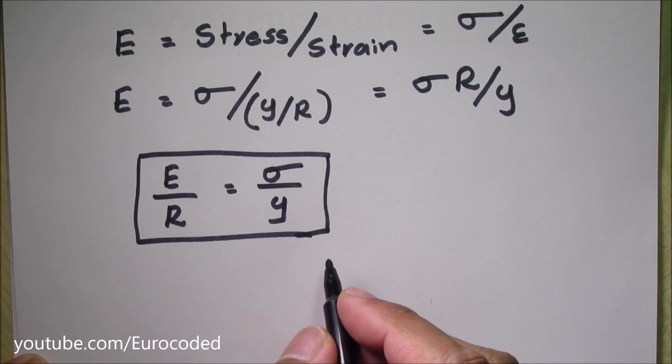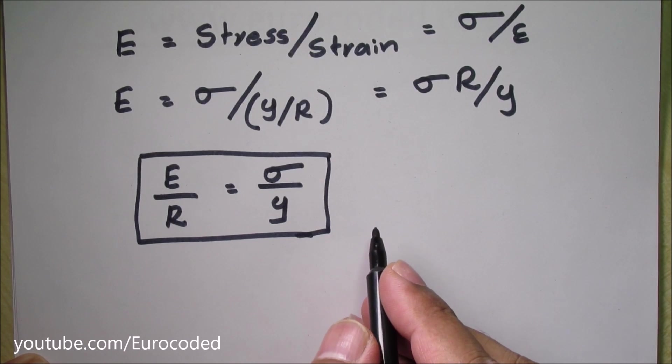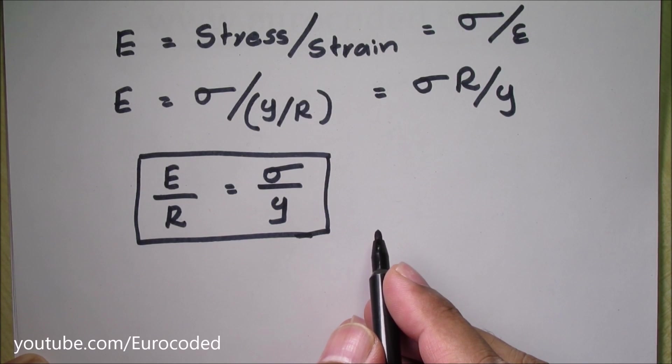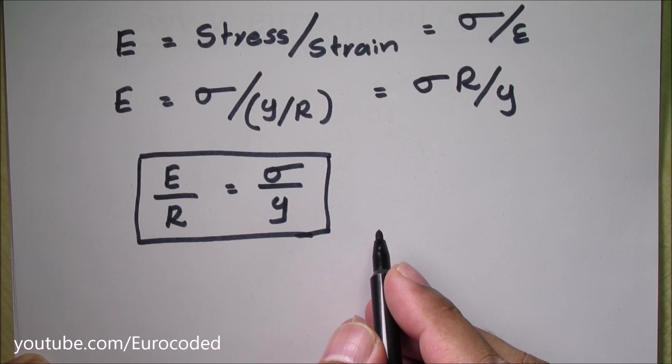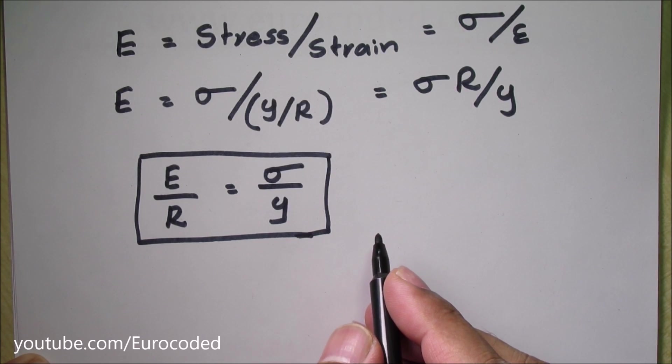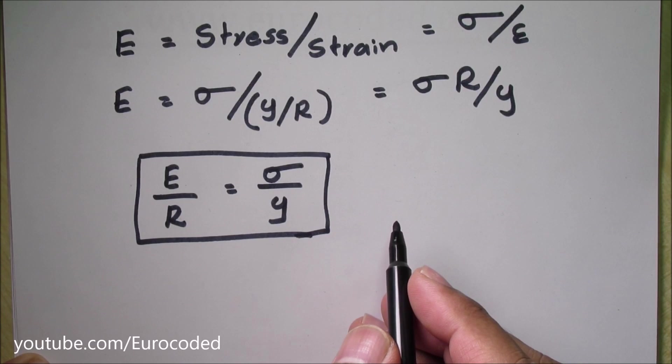This equation is very useful and this can be used to show that bending moment acting at any given point along the length of a beam is dependent on the radius of the curvature. Also, this equation can be used to develop the deflection equations for beams with different loads and support conditions.